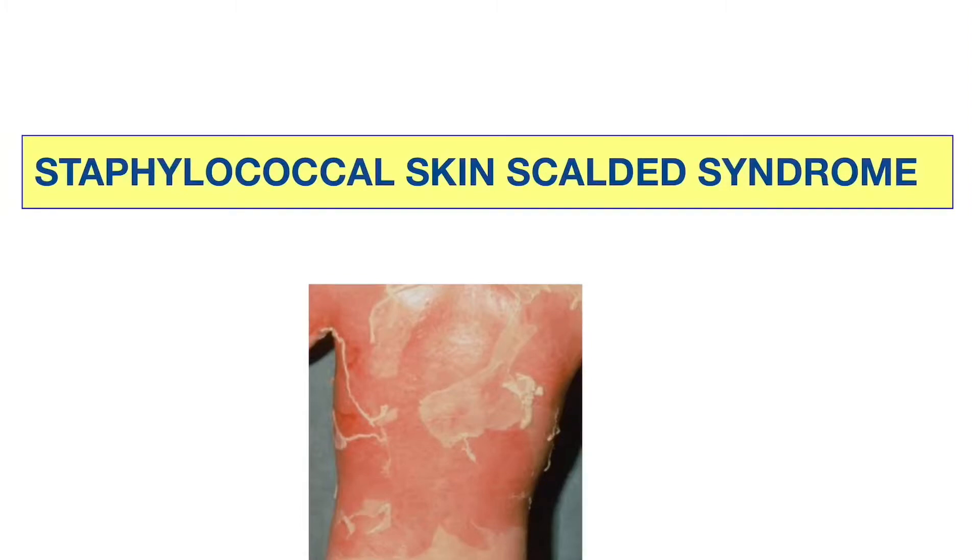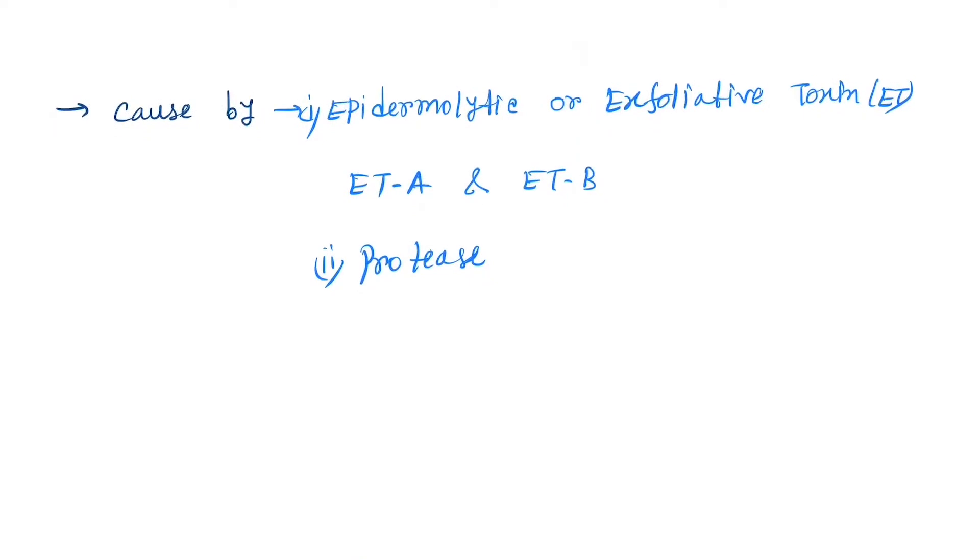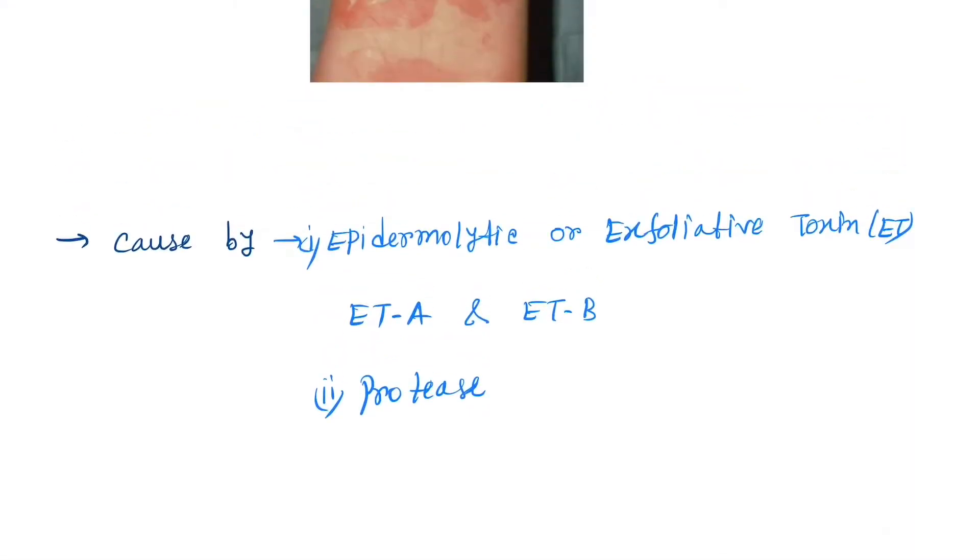Hello friends, today our topic is Staphylococcal Scalded Skin Syndrome. It is caused by Staphylococcus, specifically by exotoxin or epidermolytic exfoliative toxin ETA and ETB, and protease. First, let's understand the toxin - number one is exotoxin.